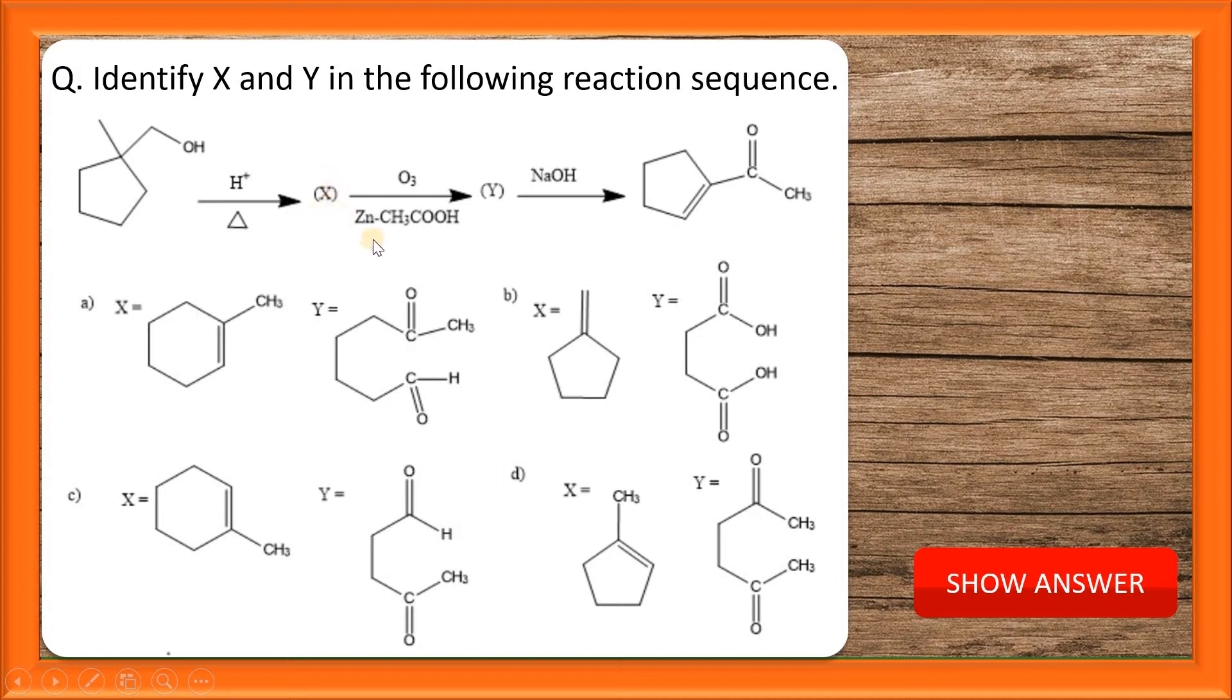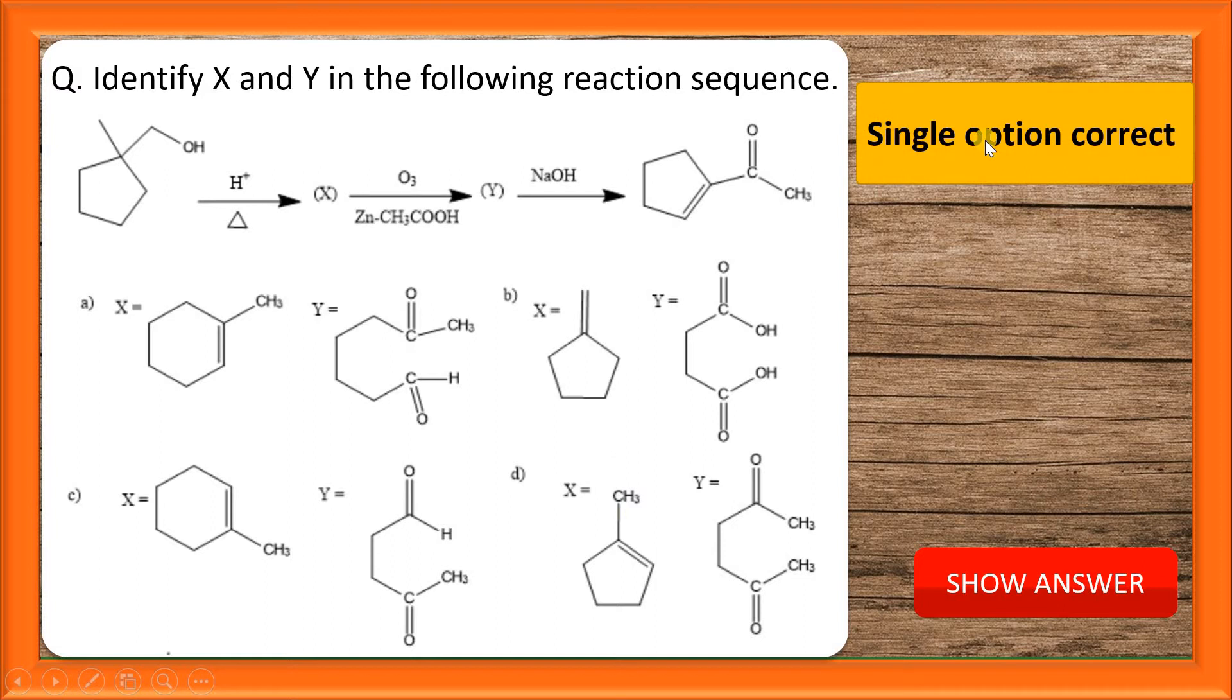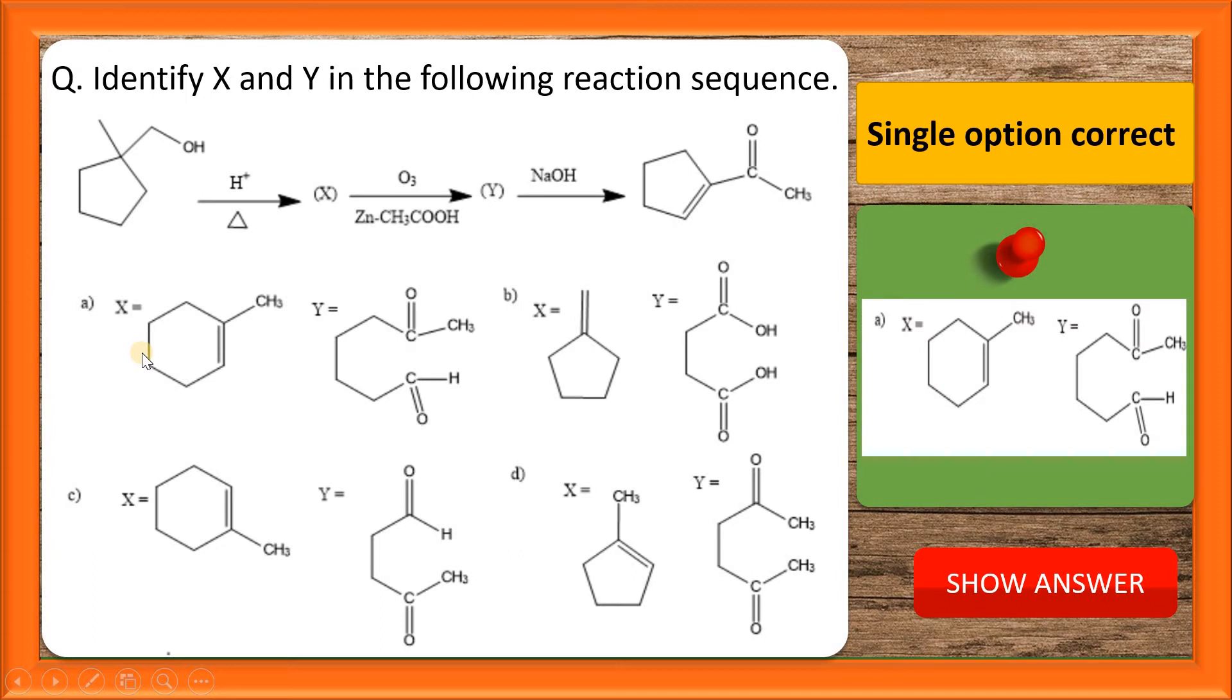X upon ozonolysis gives rise to Y, and Y in the presence of aqueous NaOH gives rise to this product. These are the options students, all single option correct category, and this answer is option number A.